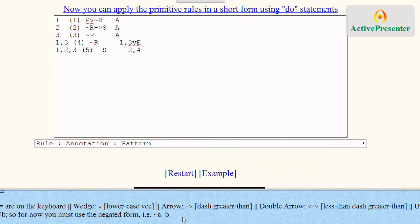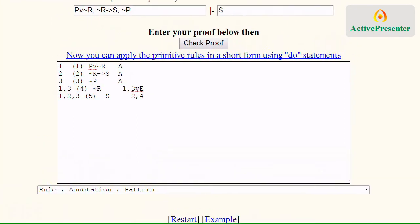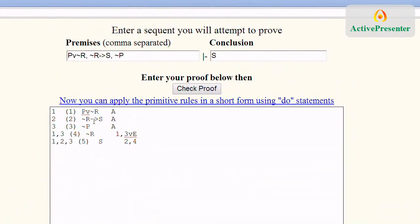Down here it gives you the notation guide. The wedge is the lowercase V, arrow is dash greater than, double arrow, and so on. You need to use those symbols, spacing doesn't matter for that.